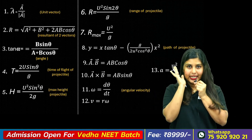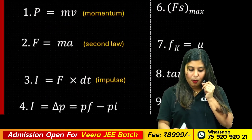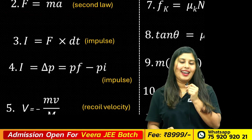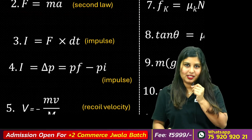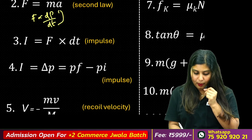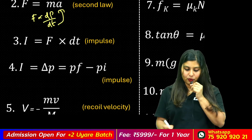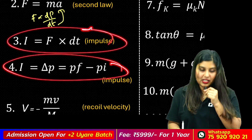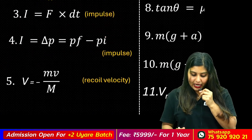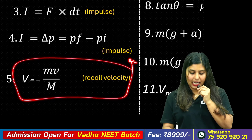The important item in Laws of Motion is the change in momentum — it is final minus initial. The recoil velocity equation is v equals minus mv by M.